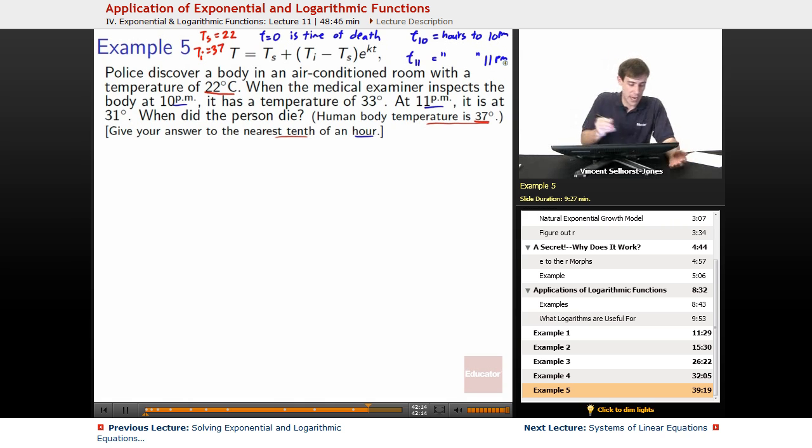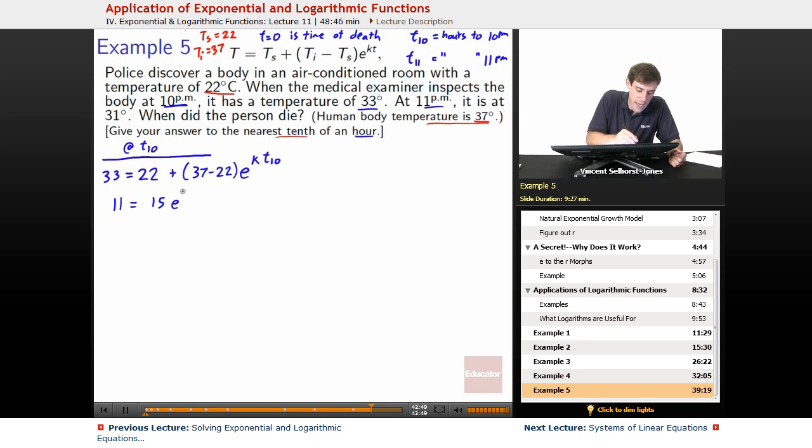At time 10 p.m., which we don't know how many hours it is after death but we can still talk about it as T10, we know that the body is at 33 degrees. So 33 degrees at 10 p.m. equals surrounding temperature 22 plus initial temperature 37 minus surrounding of 22, e to the k T10. Subtract by 22 on both sides, we get 11 equals 15 e to the k T10.